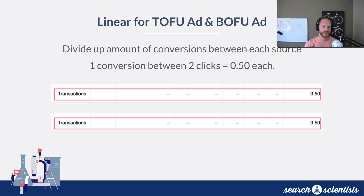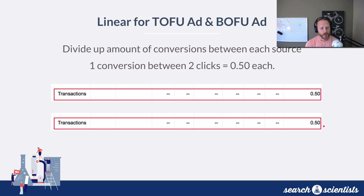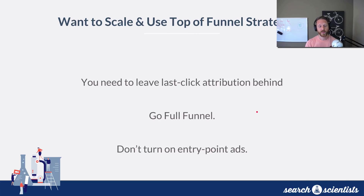Linear helps capture and spread out the attribution between top-of-funnel ads and bottom-of-funnel ads pretty nicely. In that initial example, if there's one conversion between two clicks, both of them get 0.5 each inside your account. The huge benefit of this — and the reason why I like linear attribution — is because you'd never look at a campaign anymore and say 'this campaign is useless.' If it was involved in a conversion funnel, it will register conversions. It'll even divide up revenue in the exact same way.